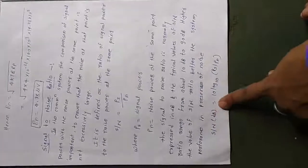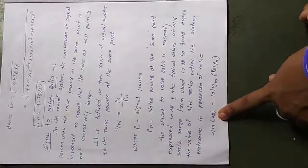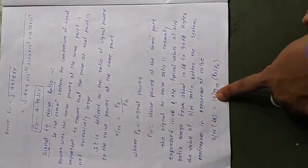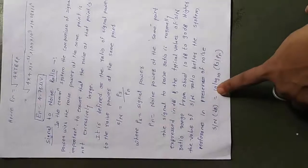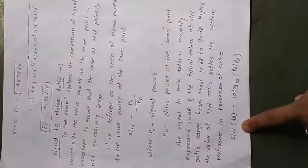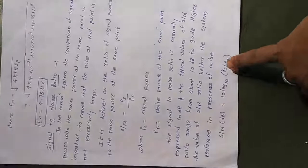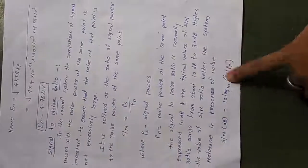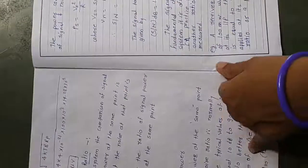When dealing in terms of power, we convert to dB using the formula: Signal-to-noise ratio (dB) = 10·log₁₀(Ps / Pn), where Ps is signal power and Pn is noise power. This is the formula for signal-to-noise ratio expressed in dB.